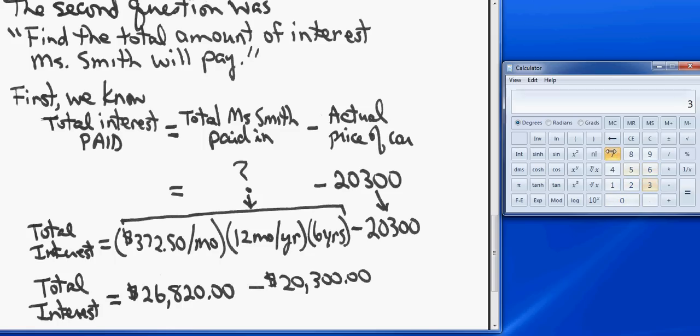I'll actually do that on the calculator, although you can already see the answer. If you take 372.50—notice I'm taking the amount rounded to the nearest cent, not that long decimal value, because that's not what she actually paid—she actually paid $372.50 a month. I'm going to multiply that by 12, and then multiply that by 6. So she actually paid in $26,820 over the course of that loan.